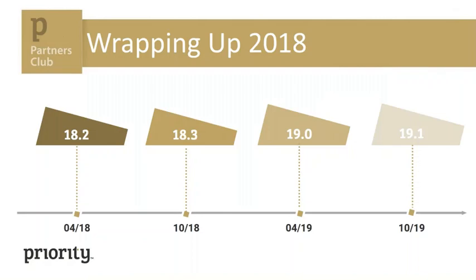We have two new versions every year on April and October. The new features on each version are a combination of subjects we want to promote according to our roadmap and needs that come up from our customers and partners. If you would like to get more details about some of the new features, you are welcome to contact me after this session. The main things we took care of on the 2018 versions were document design, as we believe this is a very important subject — it is the way that the priority-using organization presents itself to its customers and vendors.